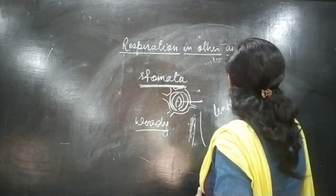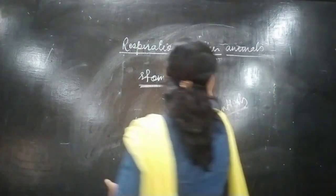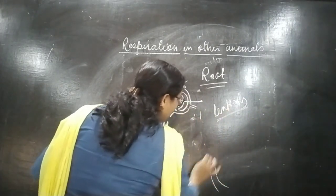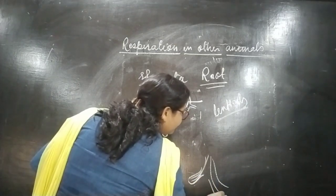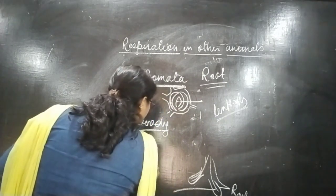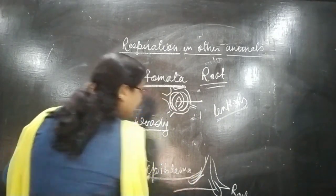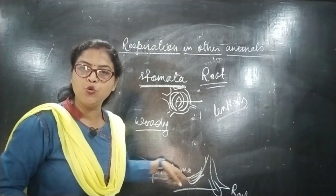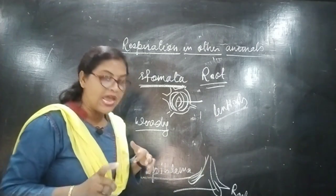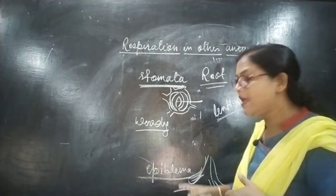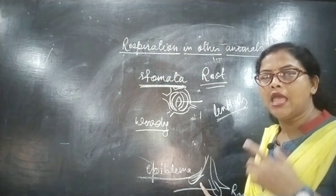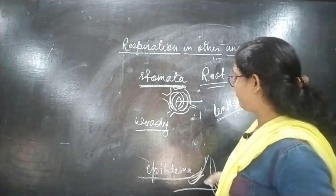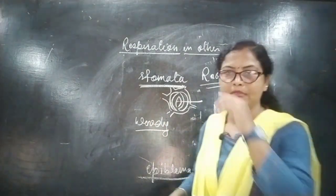The root part of the plant has root hairs — a thin layer of cells also known as epiblema. This epiblema is responsible for respiration in the root parts of the plant. The root hairs absorb oxygen present in the soil and supply it to different parts of the plant. This completes the process of respiration in plants through their different parts.